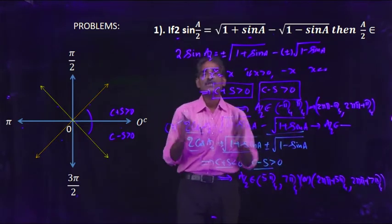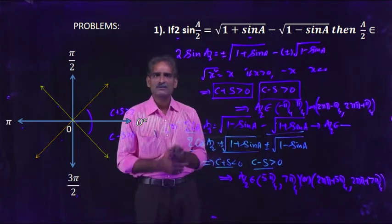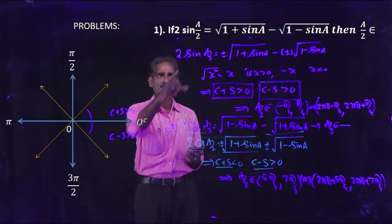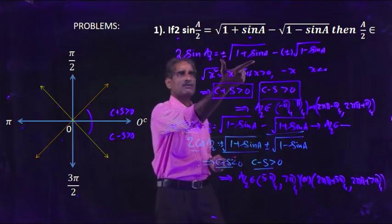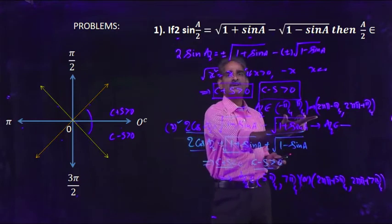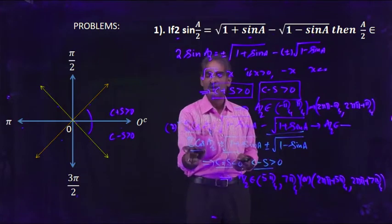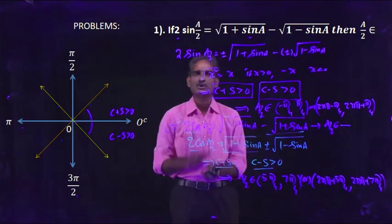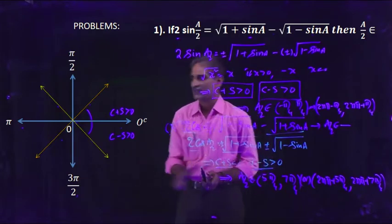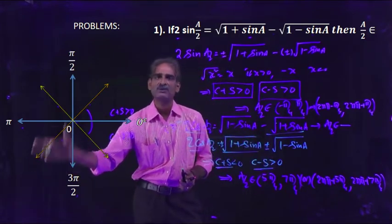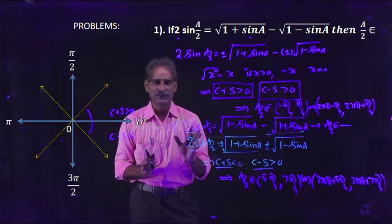This is how to find the range of a/2 when 2sin(a/2) or 2cos(a/2) is given in this expression form. By comparing with the actual formula, we can determine the nature of c+s and c-s, and from that determine the range of a/2.